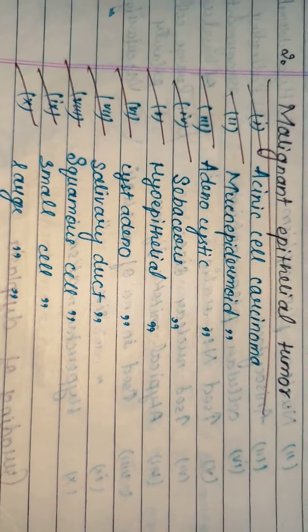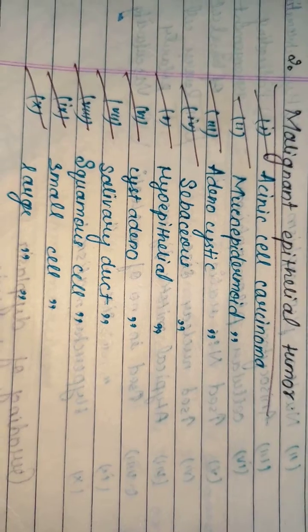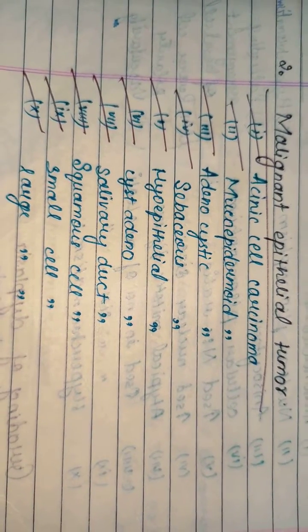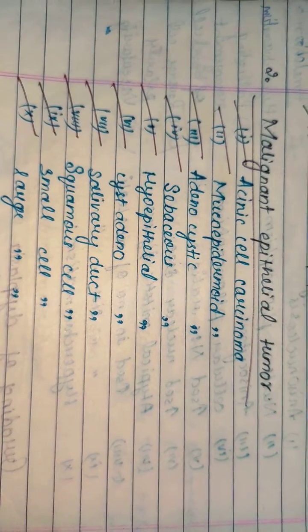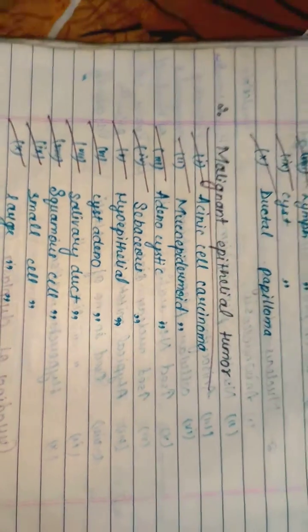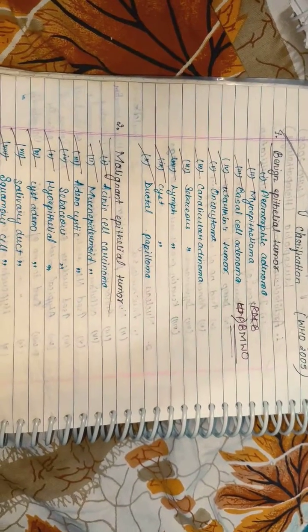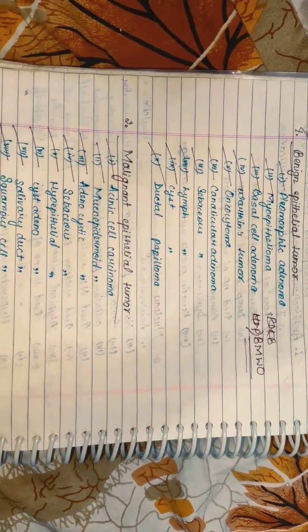cystadenocarcinoma, salivary duct carcinoma, squamous cell carcinoma, small cell carcinoma, and large cell carcinoma. These are very important classifications of salivary gland tumor.